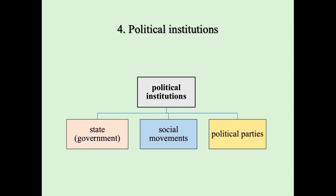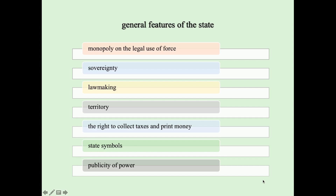Now we discuss political institutions. There are three main types of political institutions: state or government, social movements, and political parties. All of them are subjects of politics and of political processes. General features of the state are: monopoly on the legal use of force, sovereignty, lawmaking, territory, the right to collect taxes and print money, state symbols, and publicity of power.